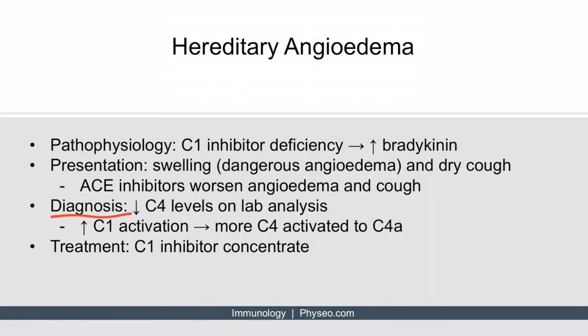When it comes to diagnosis, you will look for lower C4 levels. C4 is another complement protein you'll see in the next section on the complement system. Without adequate C1 inhibition, there will be more activation of C1; downstream, this leads to more C4 protein getting activated to C4A, so there will be higher C4A but lower C4. The treatment is logical and aimed at the underlying issue: since the patient lacks a C1 inhibitor, you give them C1 inhibitor concentrate.